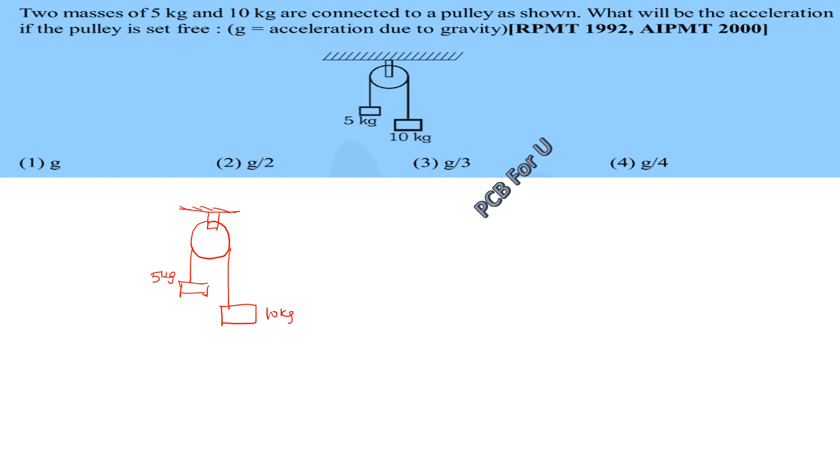Tensions are in both strings. Weight W is equal to mg. The weight of the block is equal to mg.